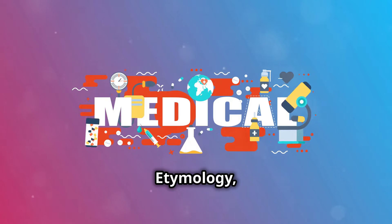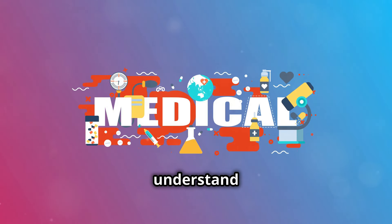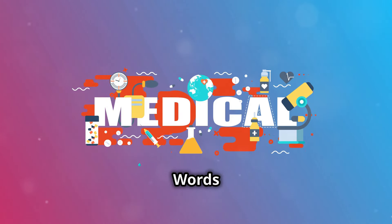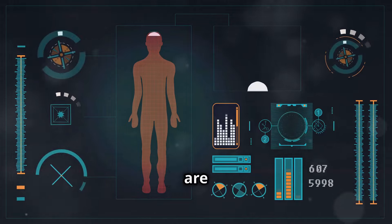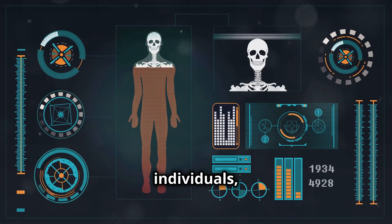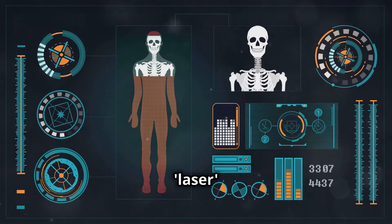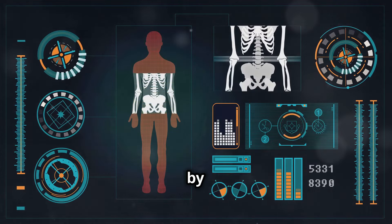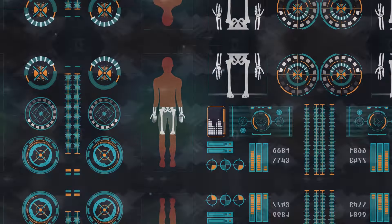Etymology, the study of word origins, helps us understand medical terminology. Words like Parkinson's disease are eponyms, named after individuals, while acronyms like laser stand for light amplification by stimulated emission of radiation.